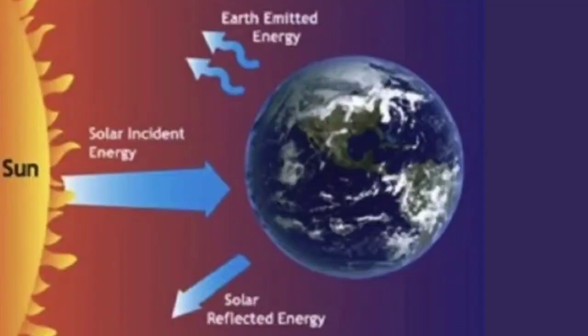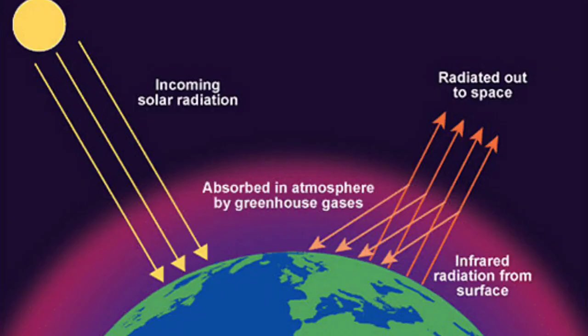The source of heat for the Earth is the Sun. The heat and energy that comes from the Sun reaches the Earth in short waves and is called incoming solar radiation, or insolation. These short waves are not able to heat the atmospheric gases, as the atmospheric gases cannot absorb the short waves of insolation. The atmosphere is more or less transparent to the incoming solar radiation.